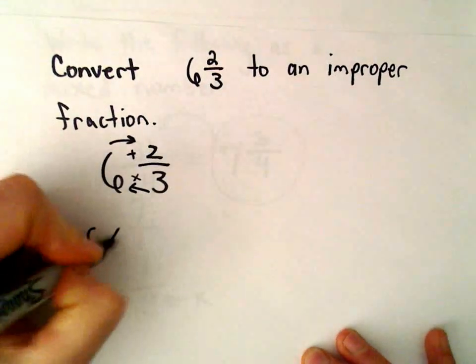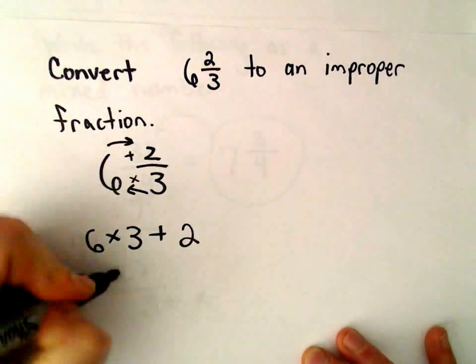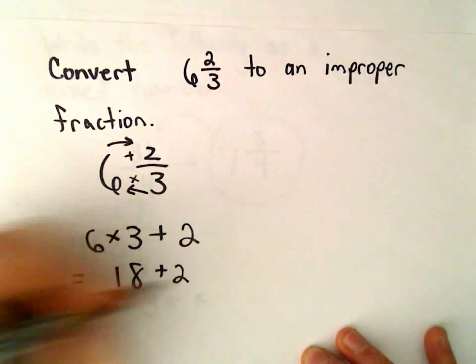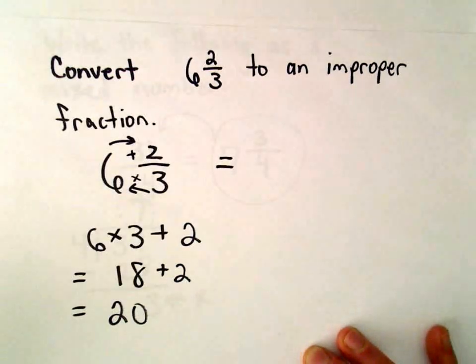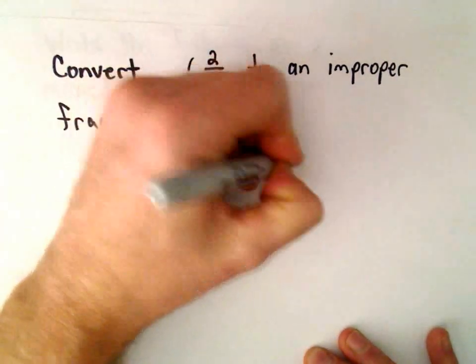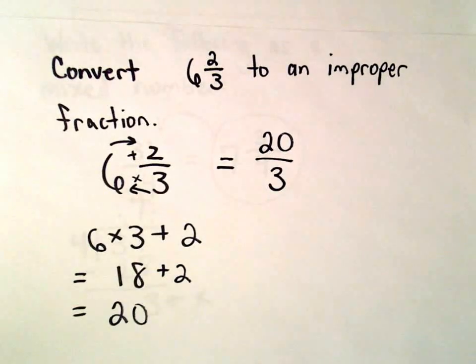So let's see, 6 times 3 plus 2 is what we're doing. So that's going to give us 18 plus 2, which is 20. And what we do is when we rewrite this number, this number that we have here is what goes in the numerator of the fraction, and again we keep the same divisor.